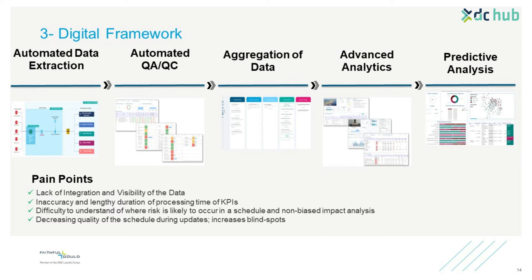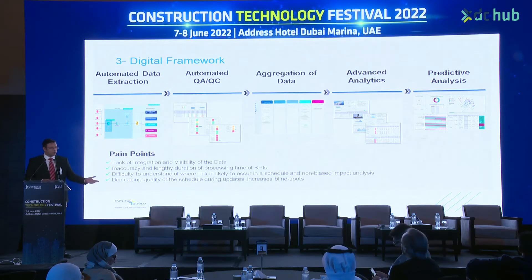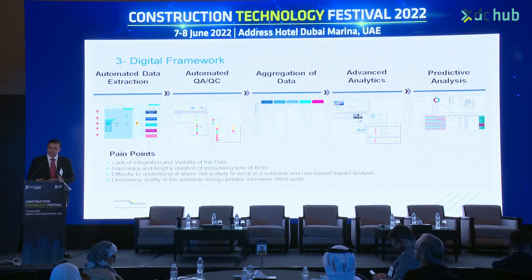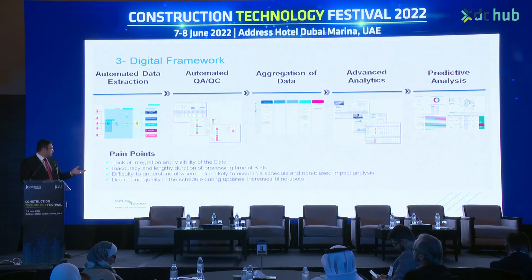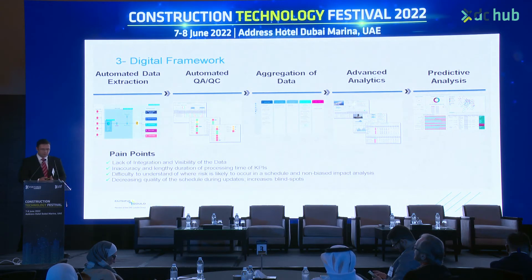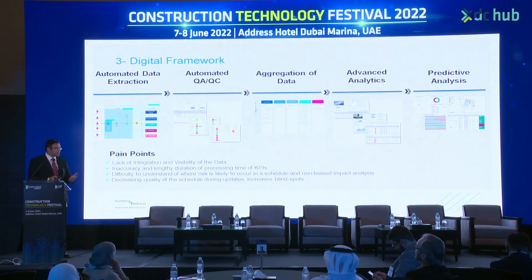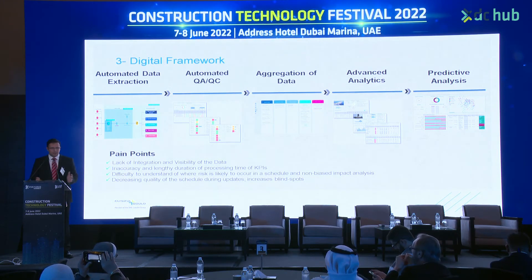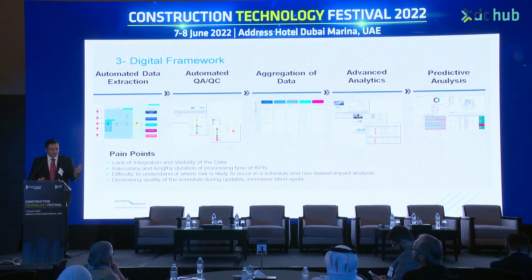We can extract data from in-source, automate quality checks - which is very important for any data you receive, otherwise you will have challenges - aggregate the data, analyze it, and build predictive analysis based on activity names, total float, successors, predecessors, and all those attributes. This addresses pain points around lack of integration and data visibility, inaccuracy in duration and KPI processes, and difficulty understanding where risk is likely to happen. It supports a non-biased approach because you set the rules - any data model is better than a subjective approach - and helps us maintain schedule quality.